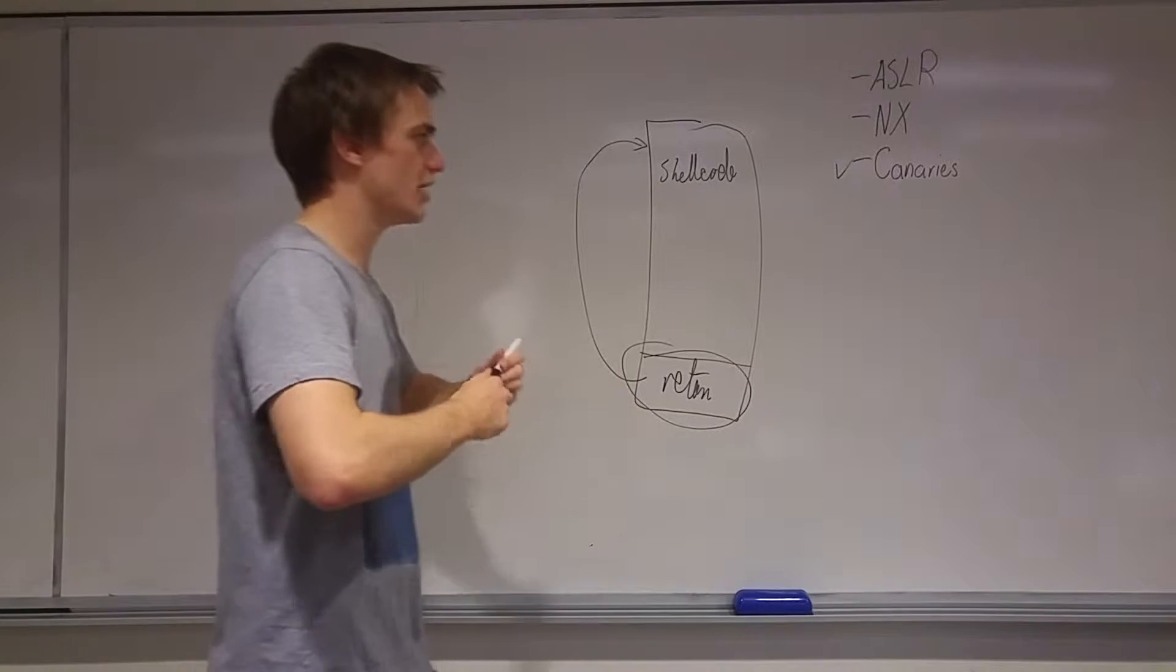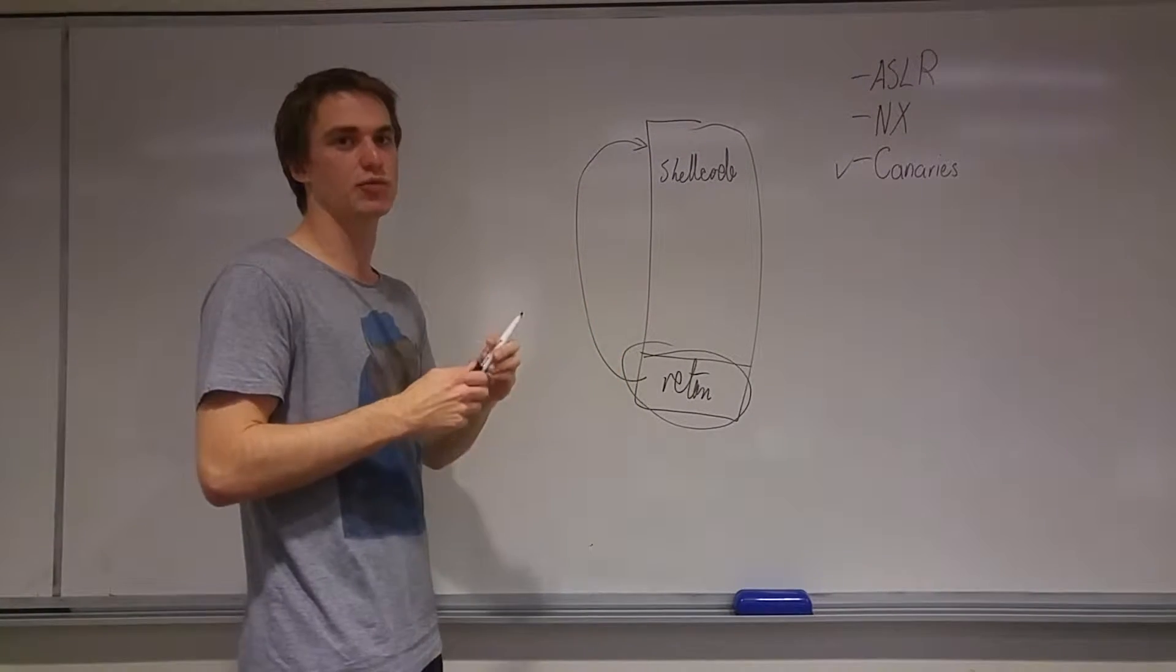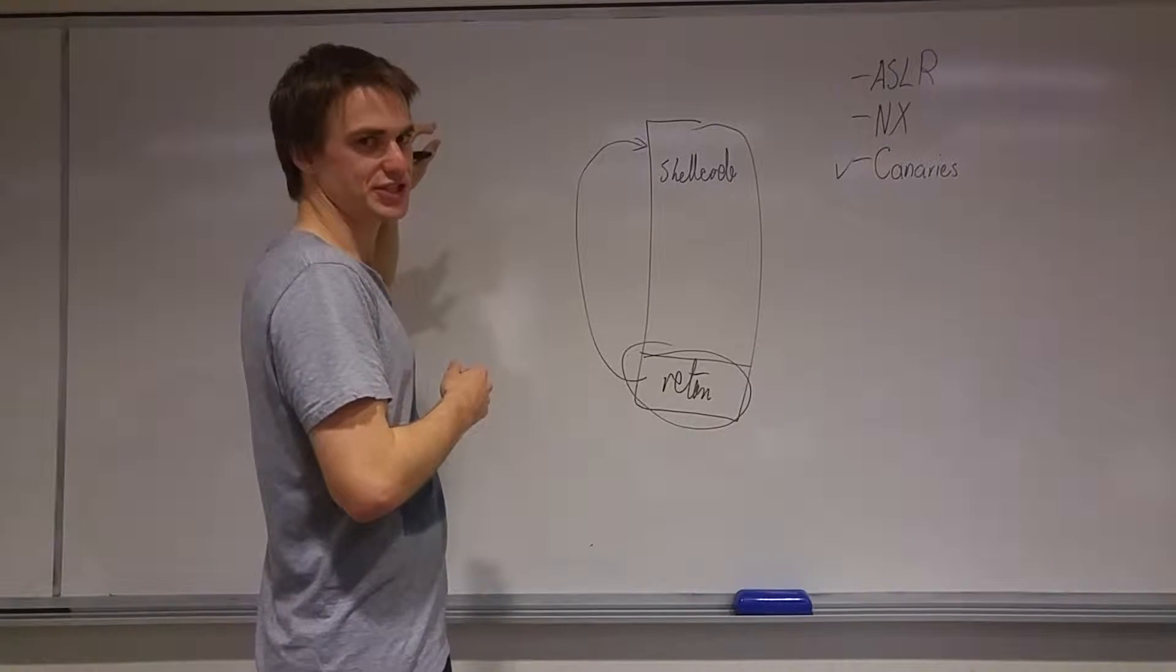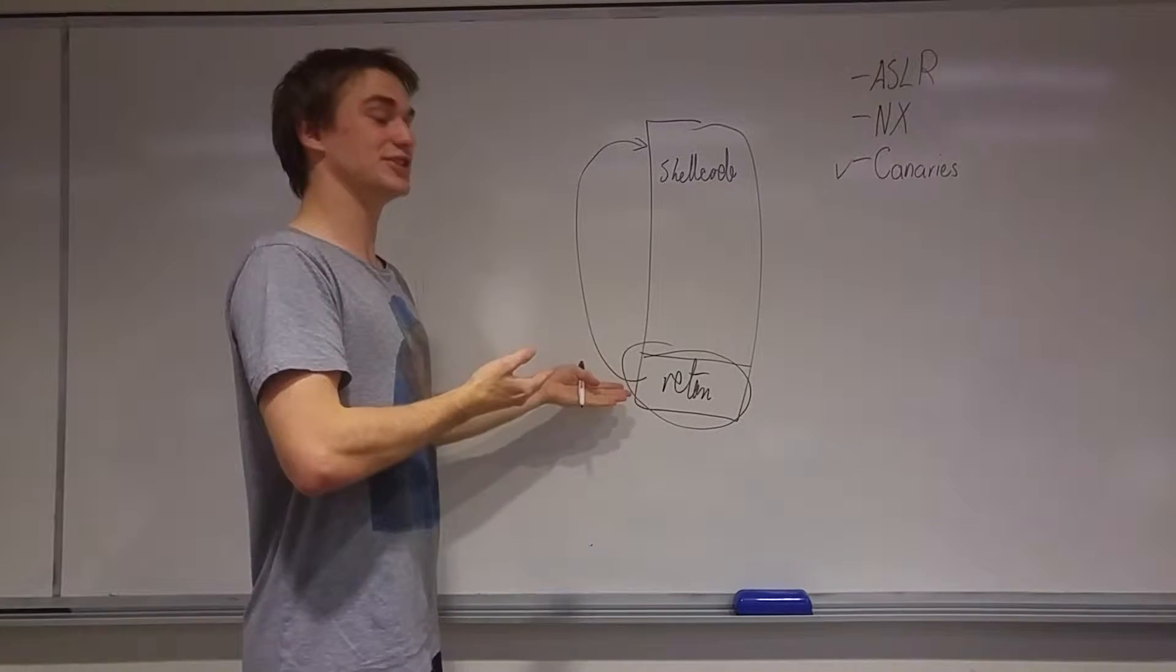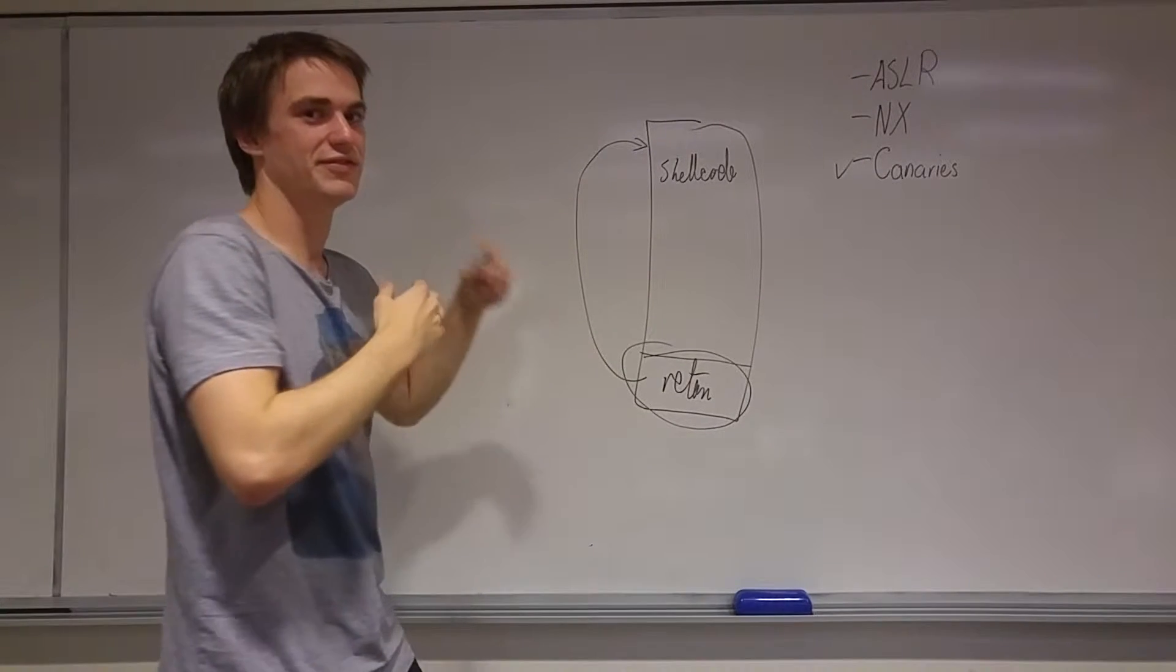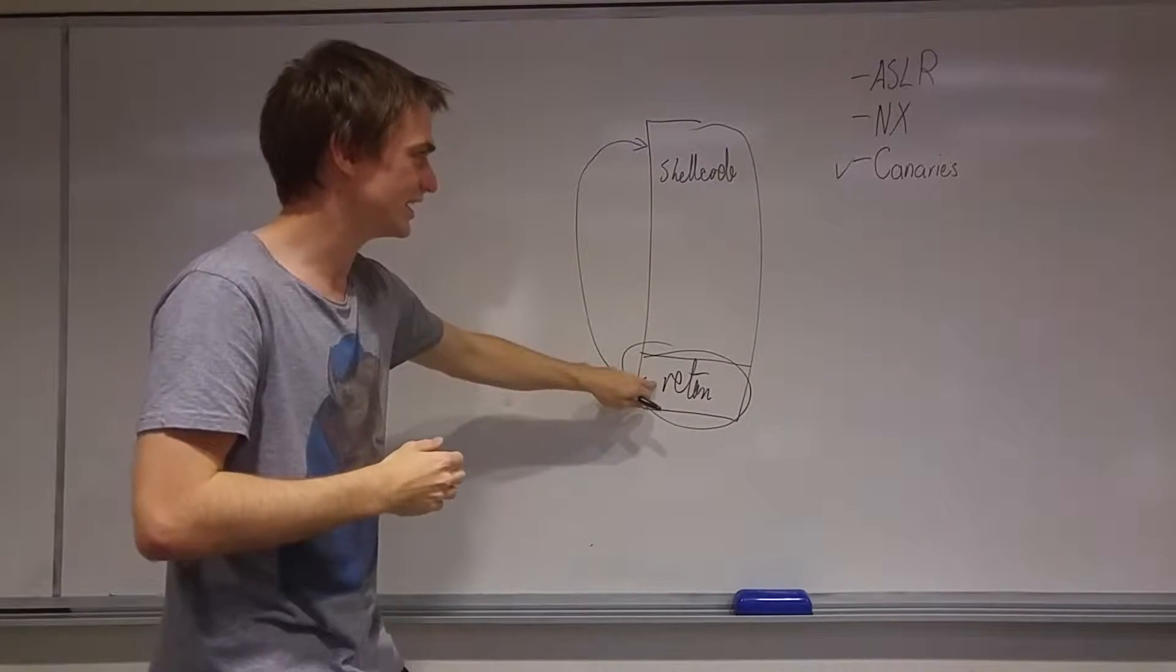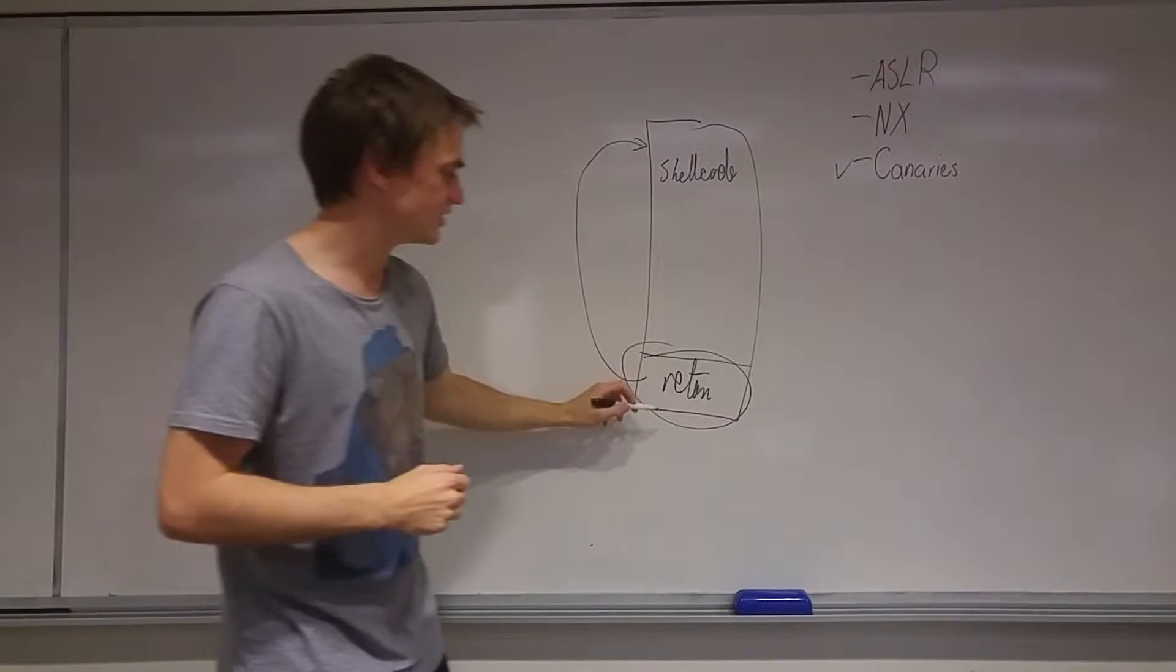And the cool thing about it is, imagine you've got some massive thing, some massive function, and it does something fairly complex, and the last two instructions on it are, for example, increment this register and exit. What we can actually do, say we want to increment that register, is we can return just to the increment register and exit, and then we have effectively got increment register and exit in this thing here, although it's not our shellcode, it still works.